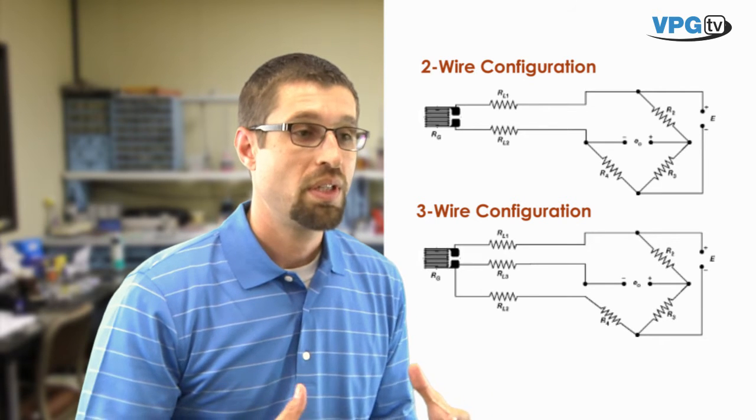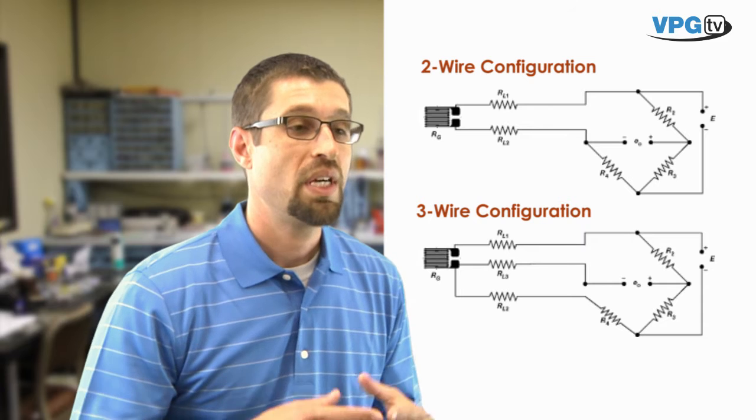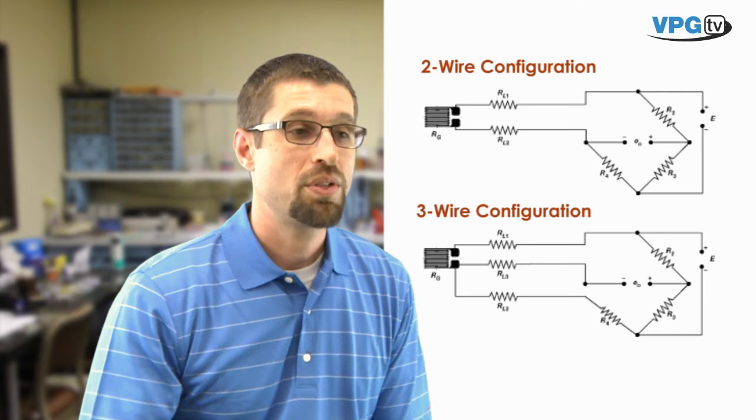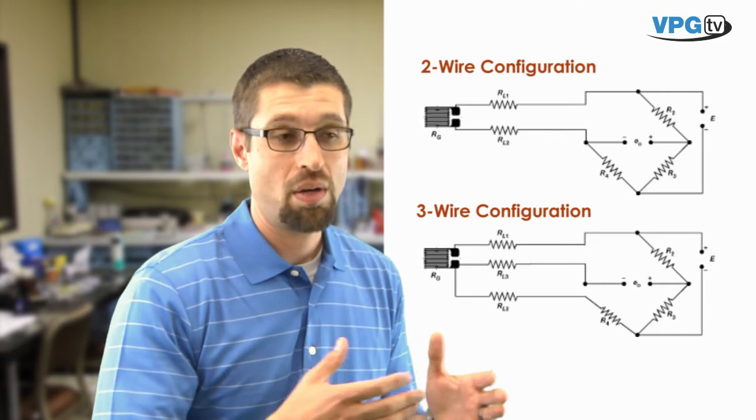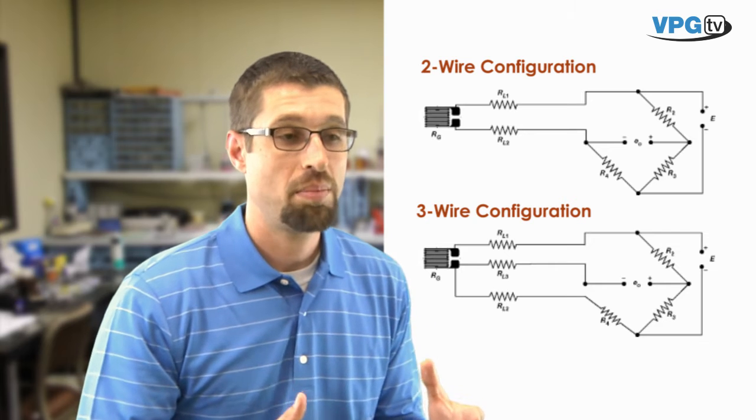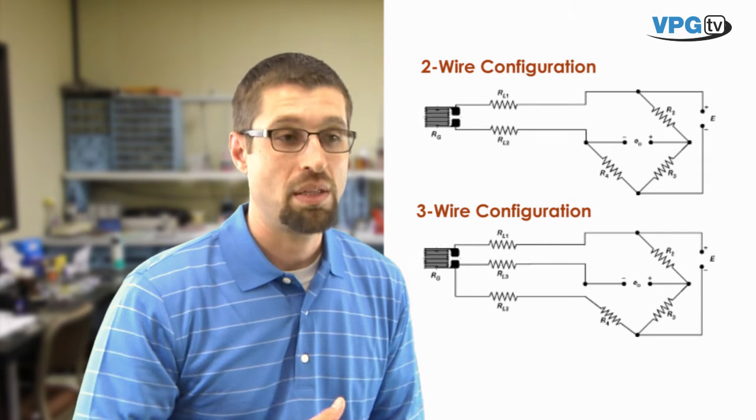The first thing that a two-wire configuration does is that it generates initial offsets in your reading, some of which could be so large due to the amount of lead wire length that you have that your instrumentation may not be able to balance those out.